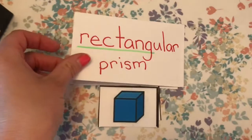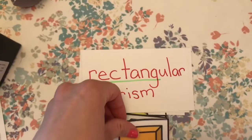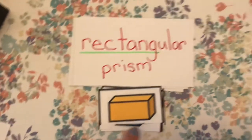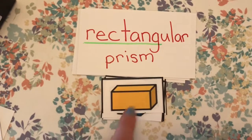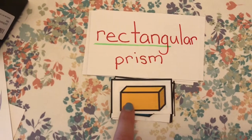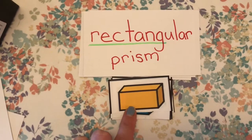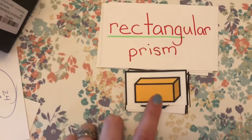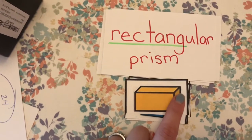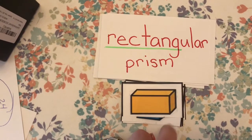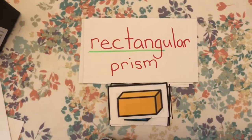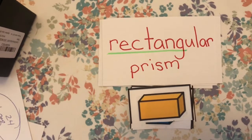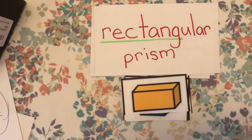Similar to a cube is the rectangular prism. A rectangular prism is where you see a rectangle on at least one of the sides. If you look carefully at this rectangular prism, you'll notice there's a rectangle on this side and this side, however on the ends there's still a square. What makes a rectangular prism a rectangular prism is that you can see a rectangle on at least one of the sides.